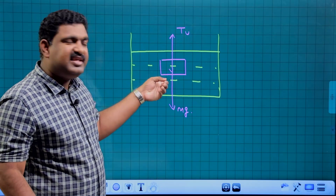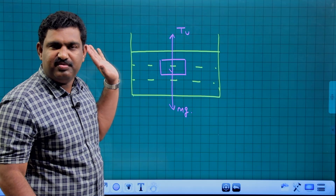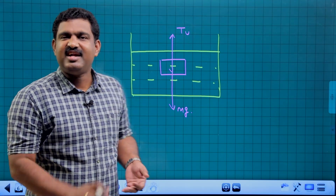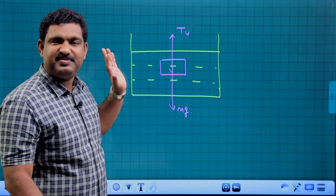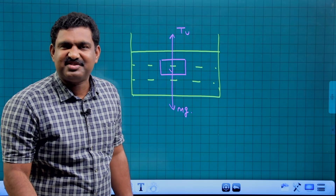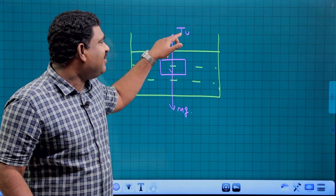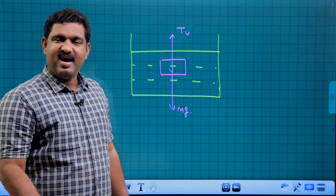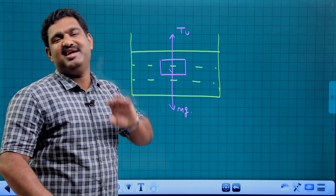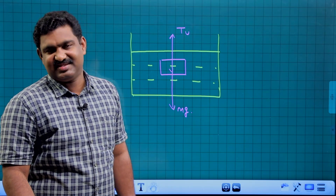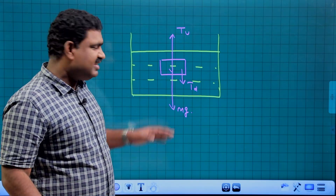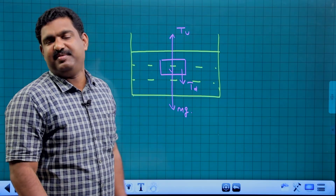If I look at this body, the liquid exerts an upward force on the body — that reduces its measured weight. By Newton's third law, there is an action-reaction pair: the body exerts a downward force on the liquid. TU is the up thrust exerted by the liquid on the immersed body in the upper direction — that is the action force.